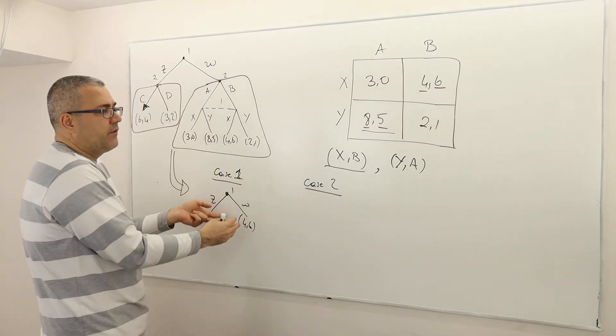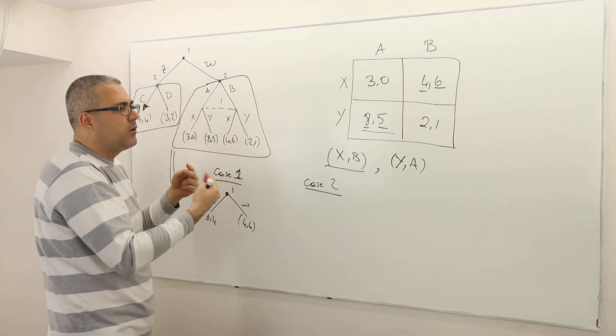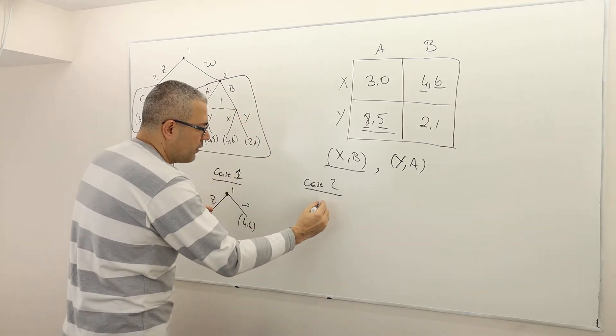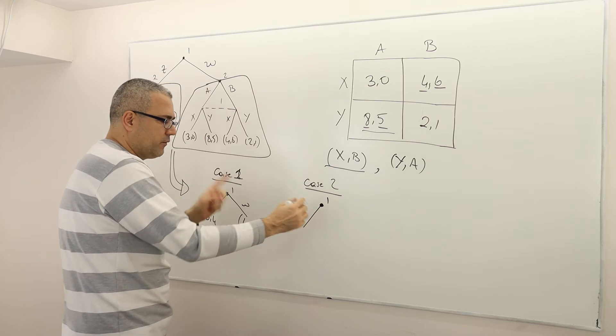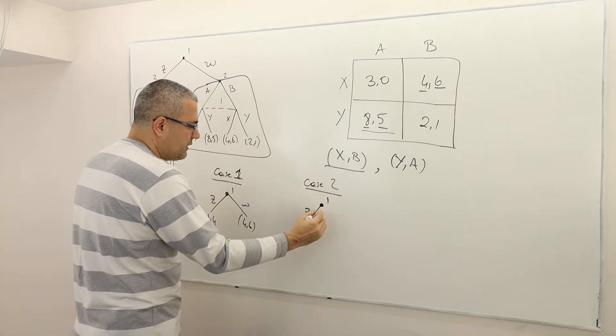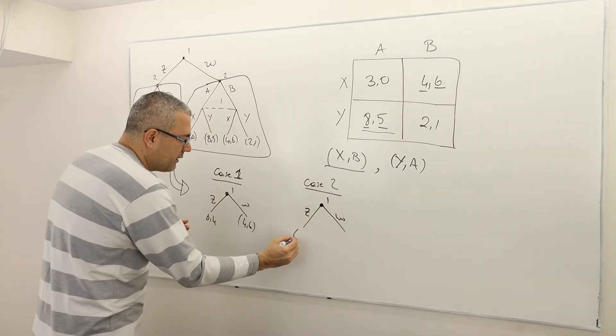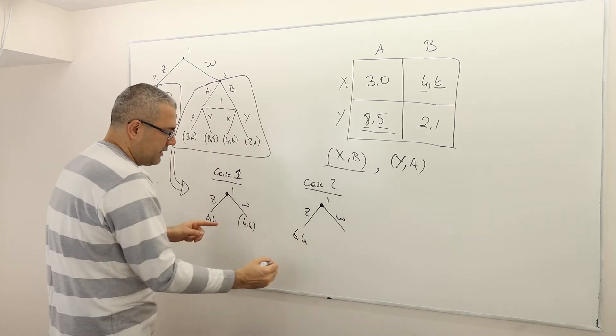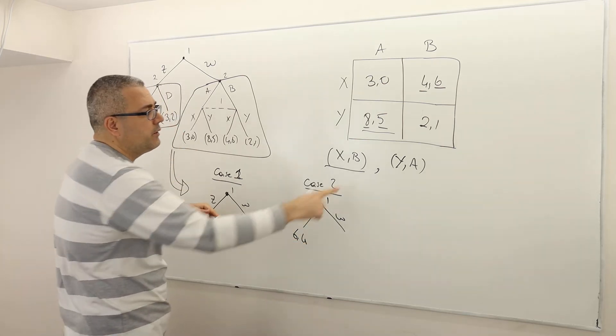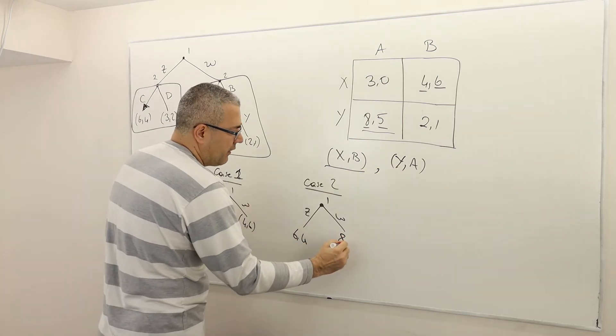Alright, well then here, instead of X,B, let's suppose they're going to play Y,A here. So therefore, the optimal decision is going to be, I'm sorry, for player 1's choices, Z versus W. Again, the payoff on Z is still 6,4. But the payoff in W is going to be 8 and 5.